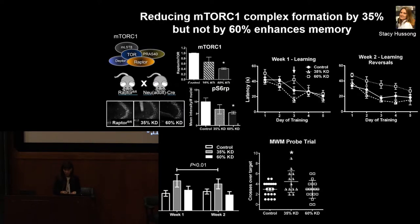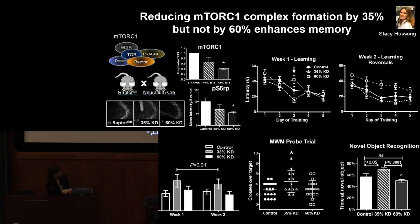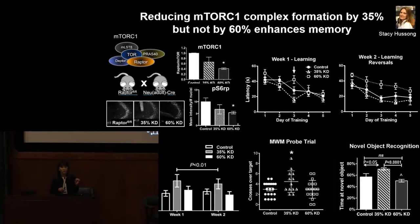To ensure this was not idiosyncratic to the water maze, we used a completely different task to test recognition memory. Again, the 35% knockdown showed enhanced performance. This effect is exquisitely specific to neurons only, during adulthood, beginning at 2.5 months of age.